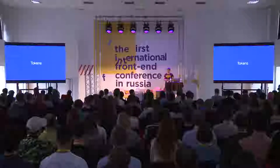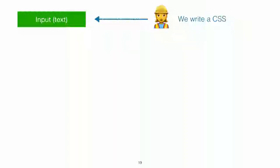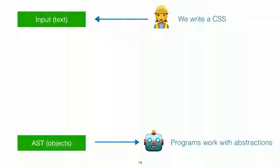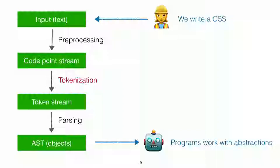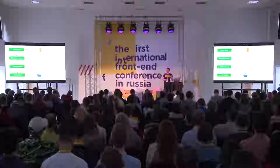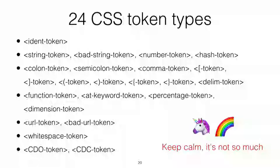Let's start from the beginning. Usually we write some CSS — it's actually some text — but programs work with abstractions, usually objects and trees. So how do we get objects from text? In CSS, like in any other language, we have several stages when we process our input to get objects or meaning from the text. The most important part here is the tokenization step. On this step, we build sequences of characters, and as a result we get a token stream. Tokens are just sequences of characters used as building blocks for our objects. There are 24 CSS tokens.